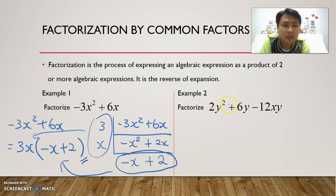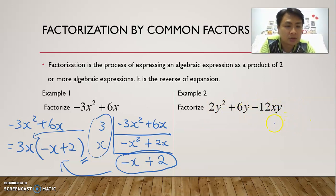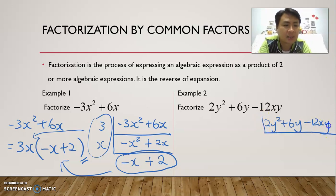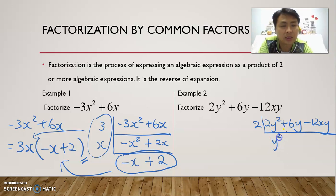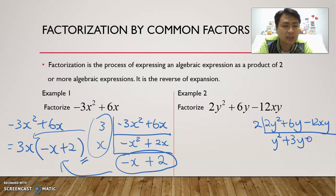Let's take a look at the second example. We have 2y squared plus 6y minus 12xy. We can do a division first. What is common between 2, 6, and negative 12? The common factor is 2, so we divide by 2. After dividing by 2, we get y squared plus 3y minus 6xy.